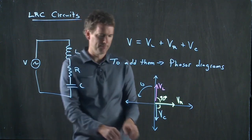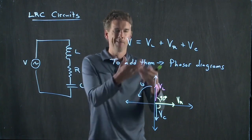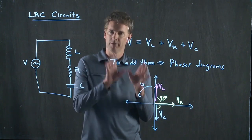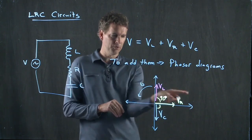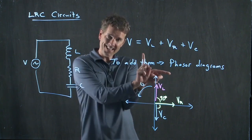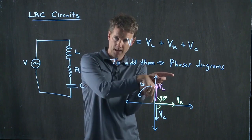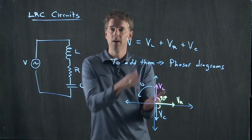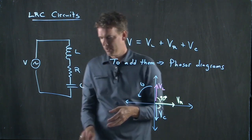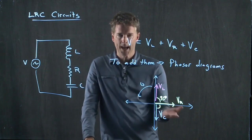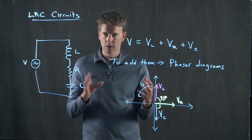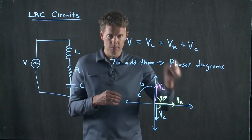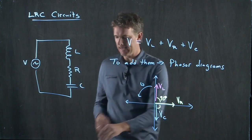In a senior-level physics course we talk about this as complex space with real and imaginary parts. But just think of it as vectors: the voltage of the resistor is pointing this way, the voltage of the inductor is pointing this way, and the voltage of the capacitor is pointing down. All three are rotating around, but they always maintain that relationship. So when we add things up to calculate overall resistance, reactance, and impedance, we can't just add them linearly — we have to add them like vectors.